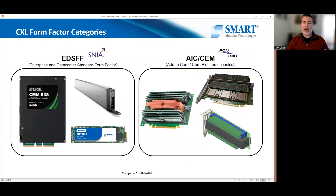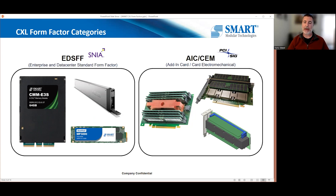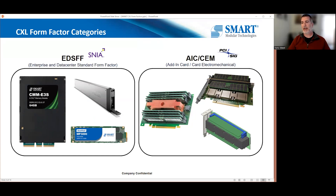The two categories of form factors I want to talk about are: first, EDSFF — the Enterprise and Data Center Standard Form Factor — which is prevalent in storage and has several different flavors. The other is the AIC, or add-in card, officially called CEM (Card Electromechanical). That one has been around forever — network cards, graphics cards, and now accelerator cards for AI applications. It's what you think of as a standard PCIe device inside the system: a large mechanical device.